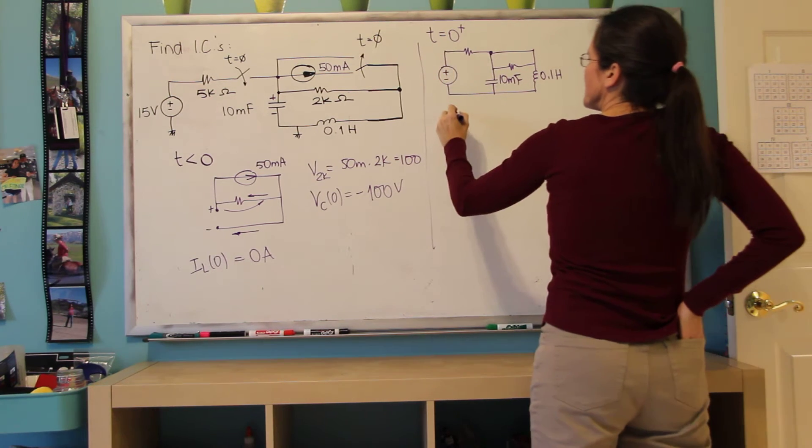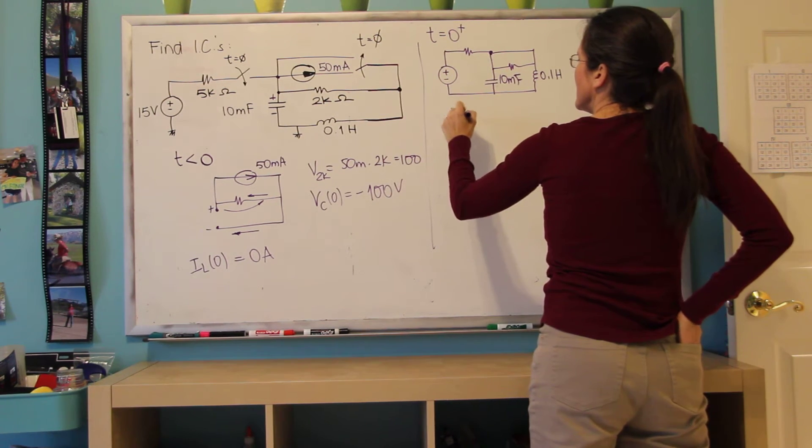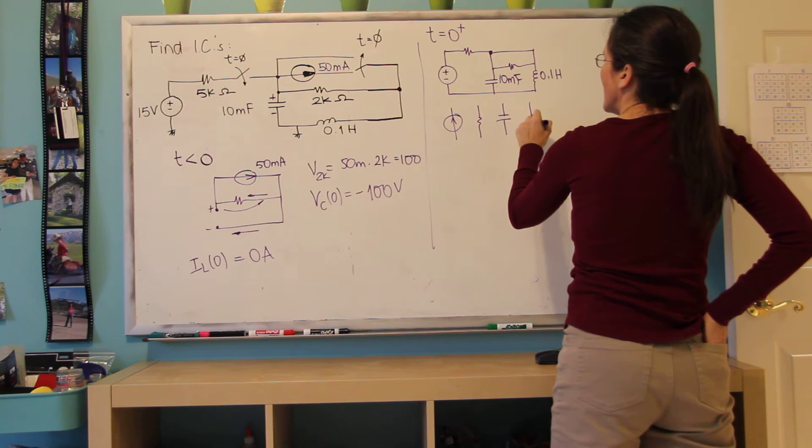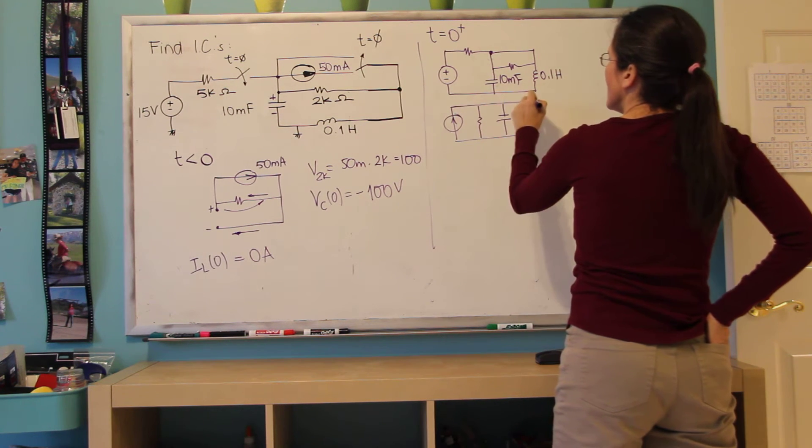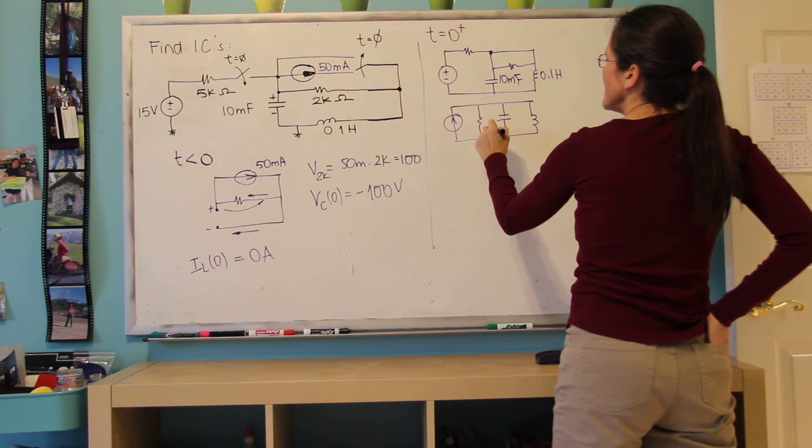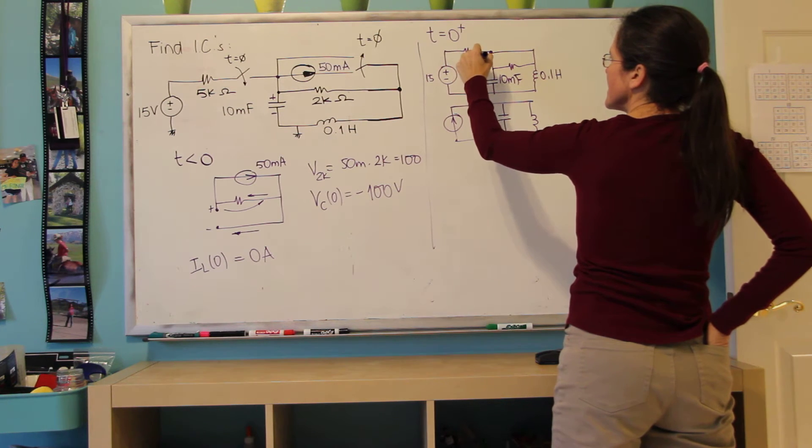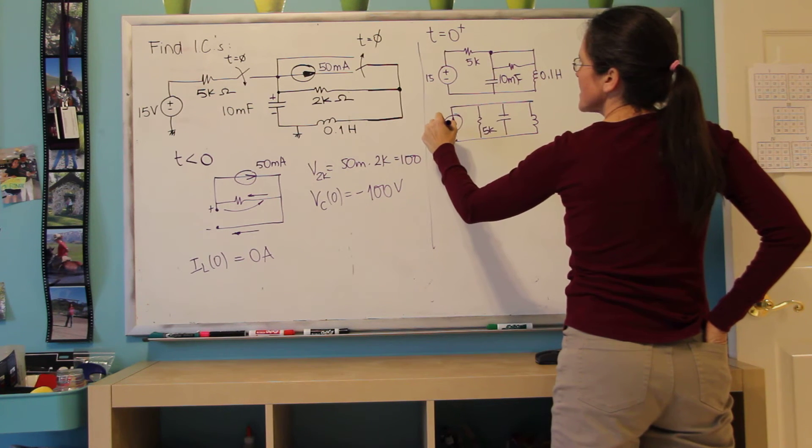And I will do a source transformation on this side so that all three are in parallel. So this now is my 5k. Here, this current is 15 divided by 5k, which is 3 milliamps.